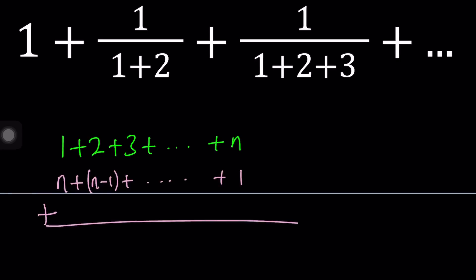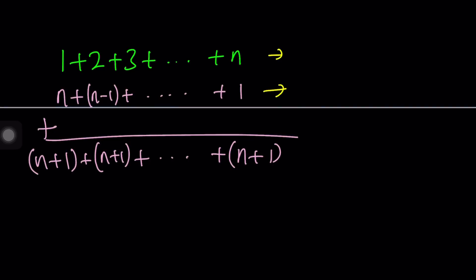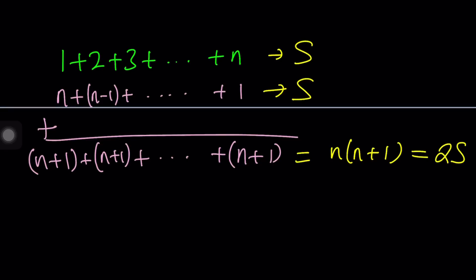He basically wrote the sum twice and added in columns. For example, n plus 1, then 1 plus n is n plus 1, then 2 plus n minus 1 is n plus 1. So all you're doing is adding n plus 1s. How many n plus 1s do you have? The answer is n, because you have n terms in each row. So the total is n times n plus 1. But you added the same sum twice, so divide by 2. This gives us the Gauss summation formula: n times n plus 1 divided by 2.